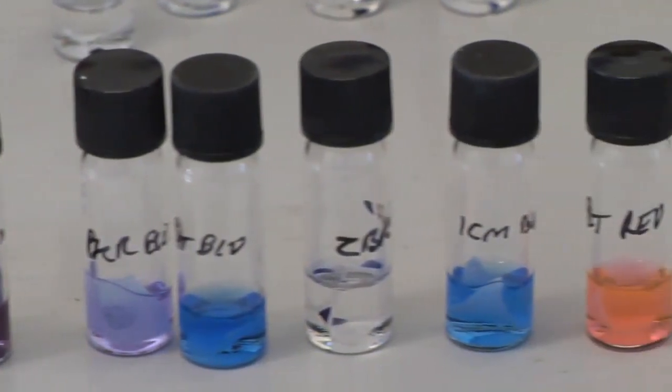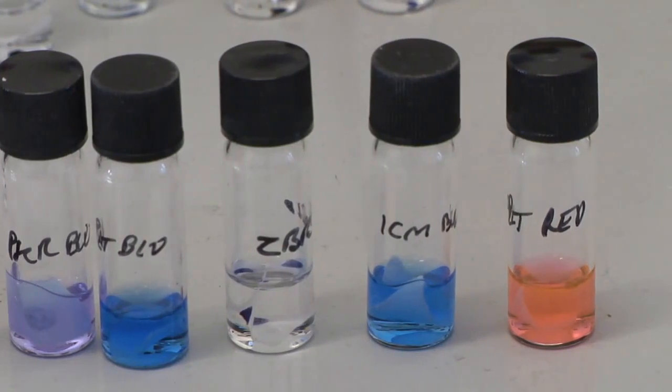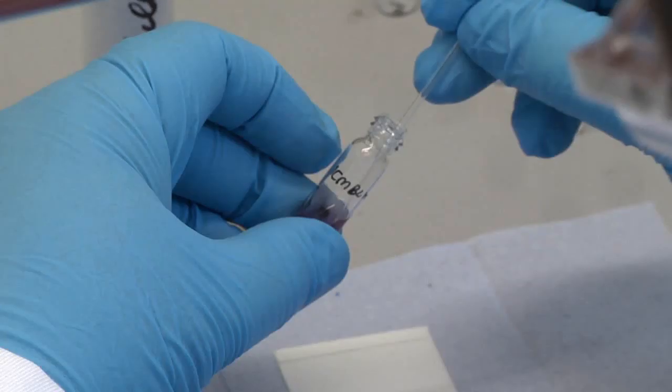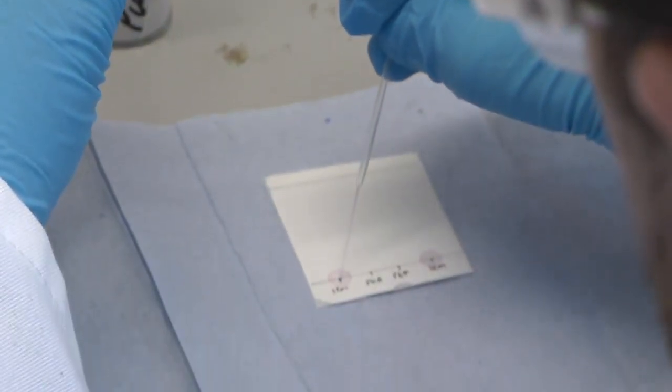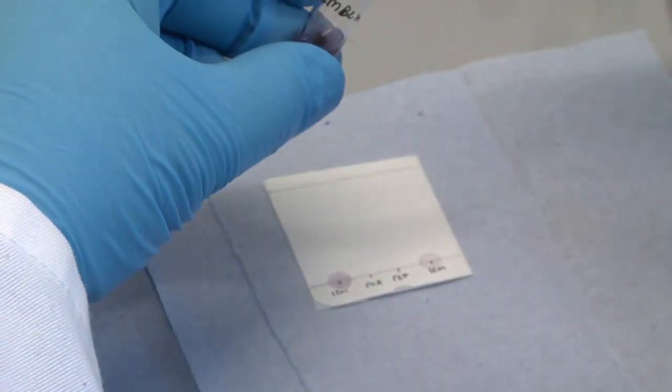These dyes are powders that dissolve in solvents and are therefore called soluble dyes. Because of their solubility, these inks can be tested using a technique called chromatography, where a sample of ink can be separated into its different dye components.